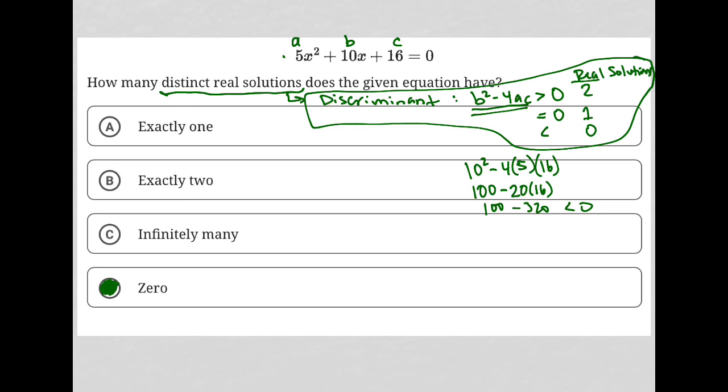If you want more questions that are similar to this, just Google sample questions using discriminants, and you'll see more questions like this. But this is basically all that you need to know. And again, the key word here is distinct real solutions. That's how I knew to go straight to finding the discriminant.